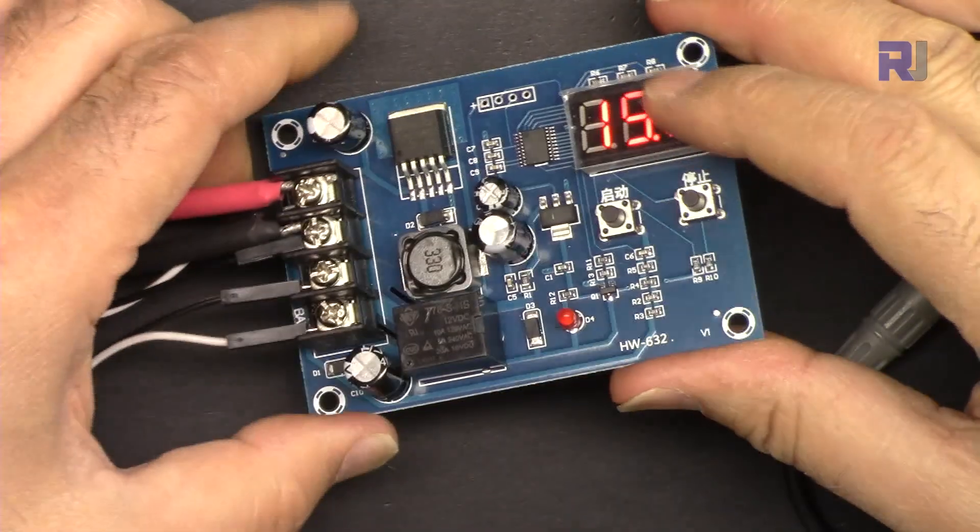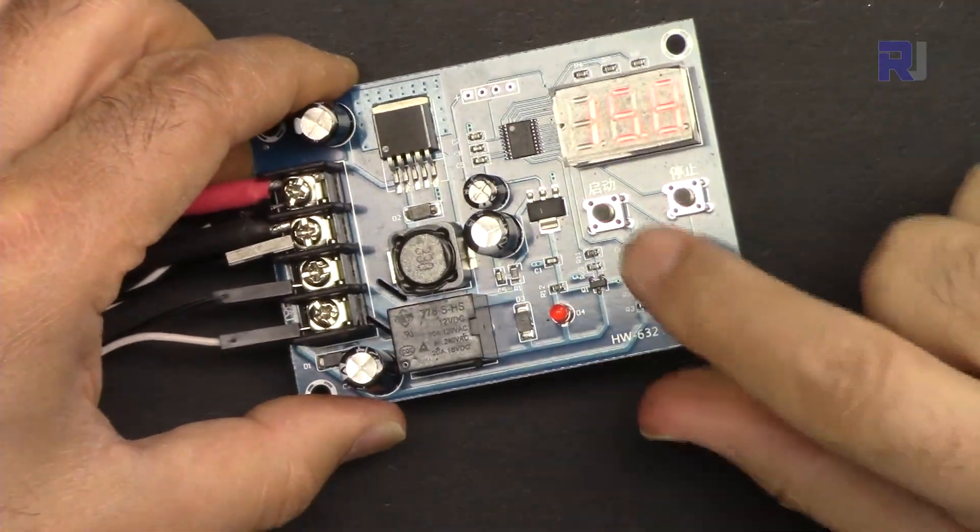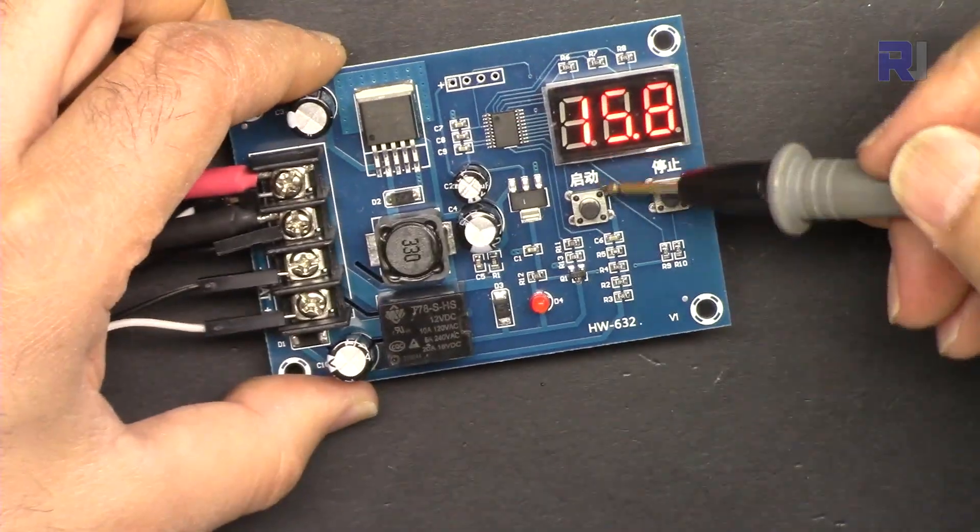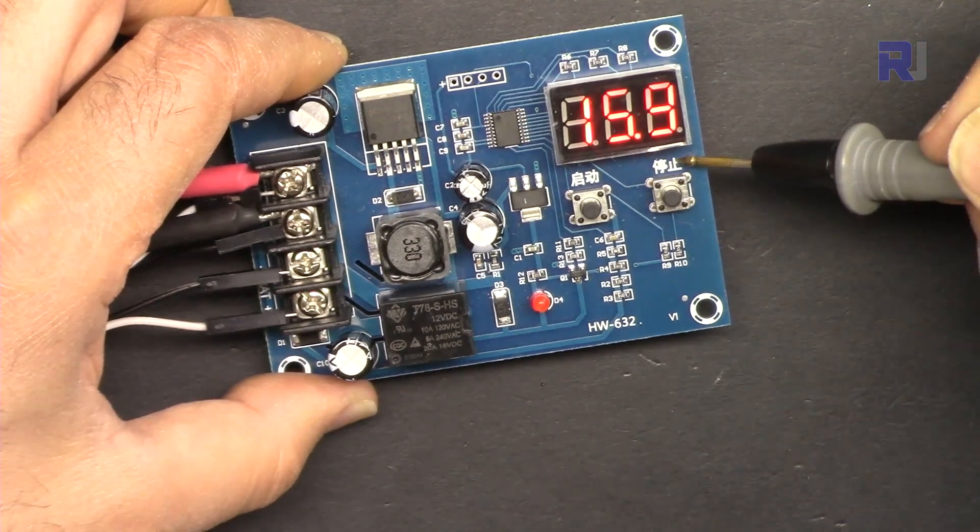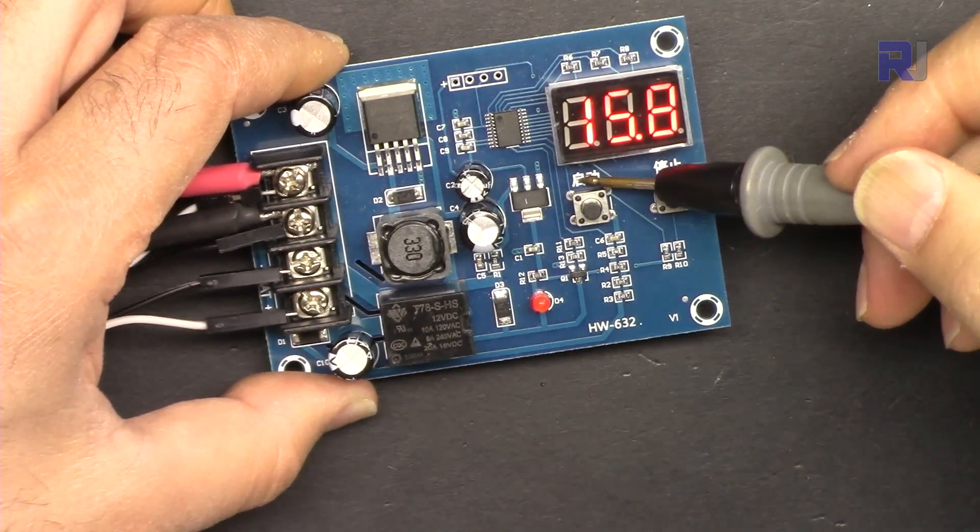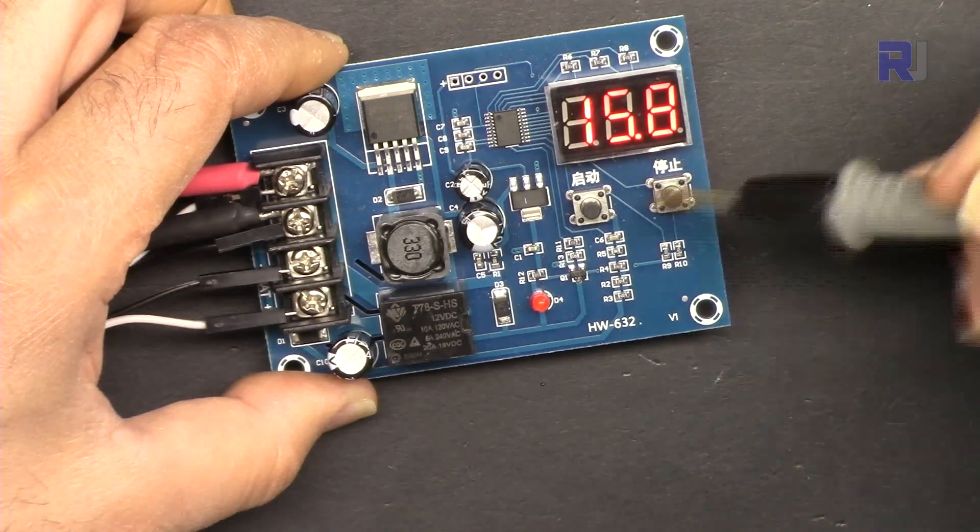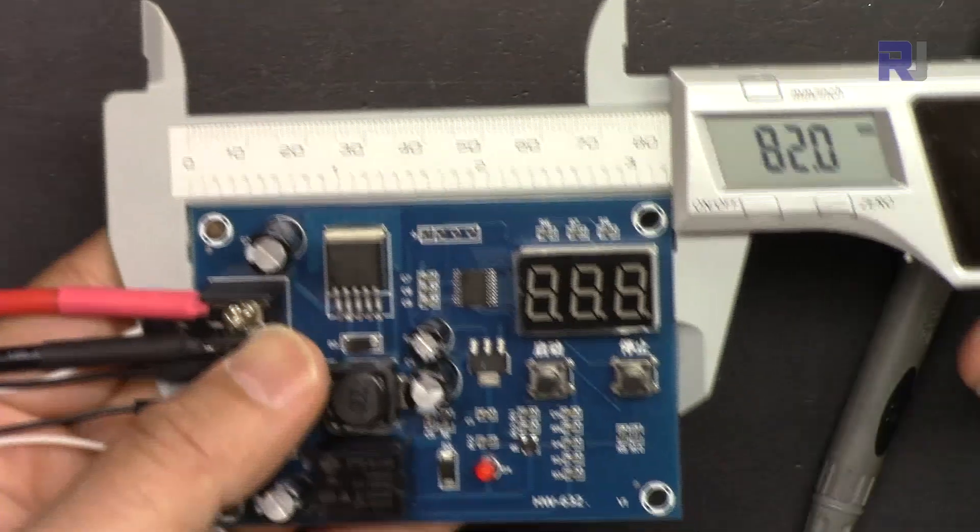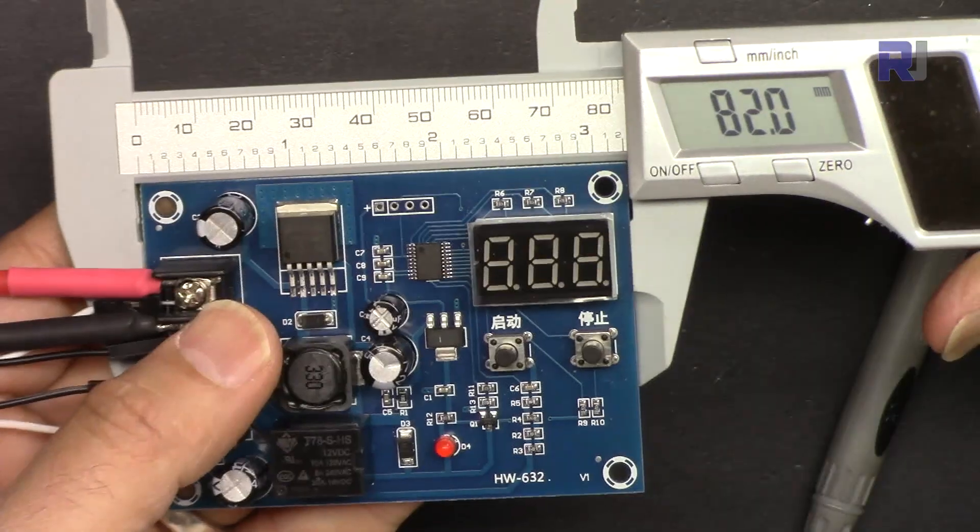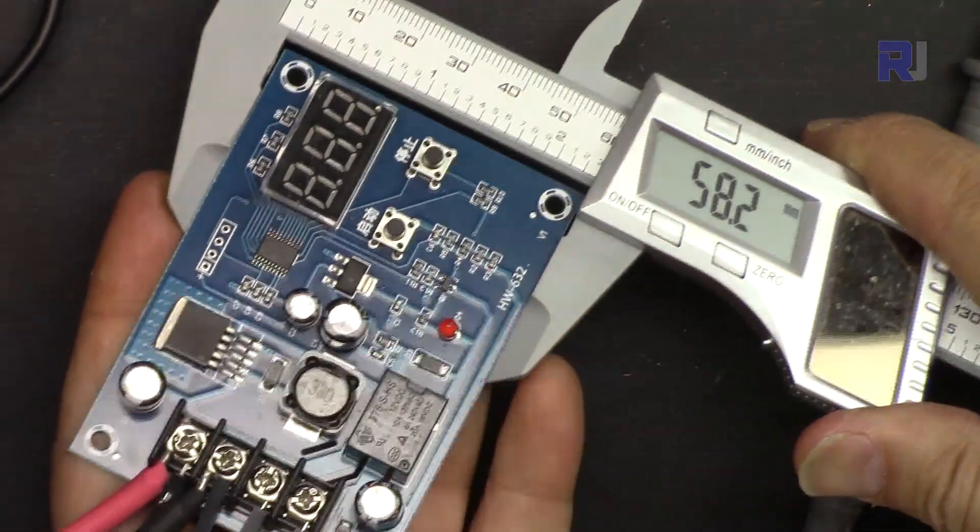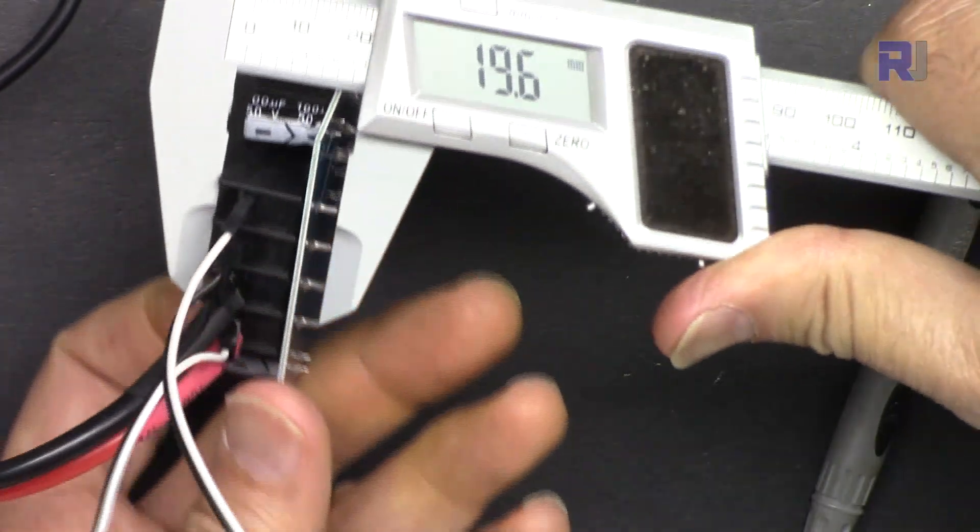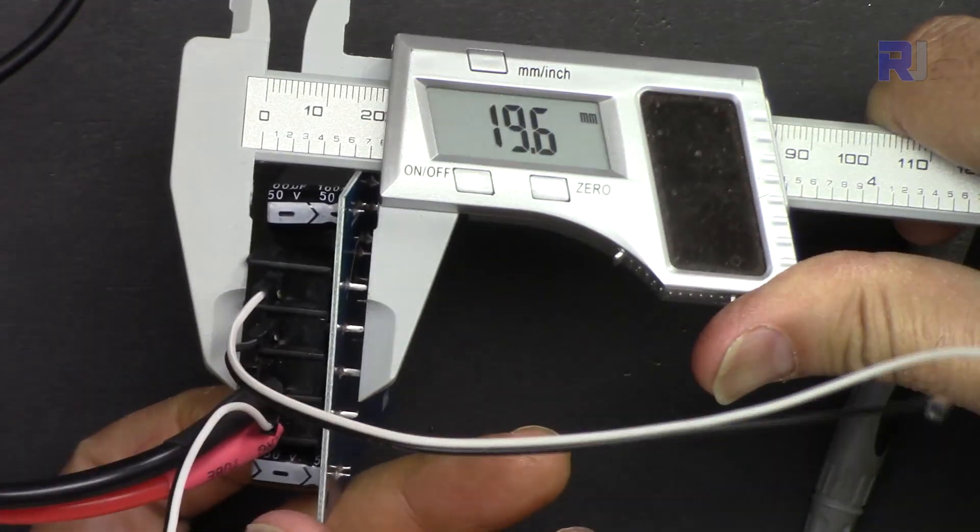We have two push buttons here for the LED display. This is the lower value in Chinese and this is the upper, so this is the start voltage and that's the stop voltage. The length of the module is 82 millimeters, width is 58.2 millimeters, and depth is 19.6 millimeters.